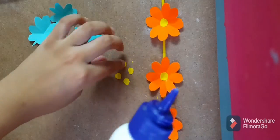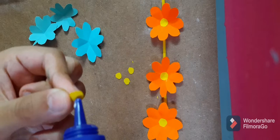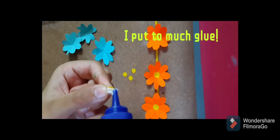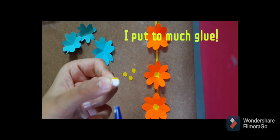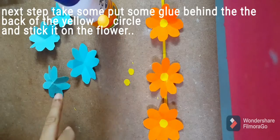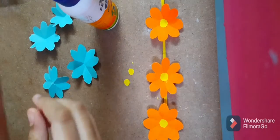You're going to take your glue, take one of the circles, and put glue on the back of your circles and stick it on in the middle of your flower.